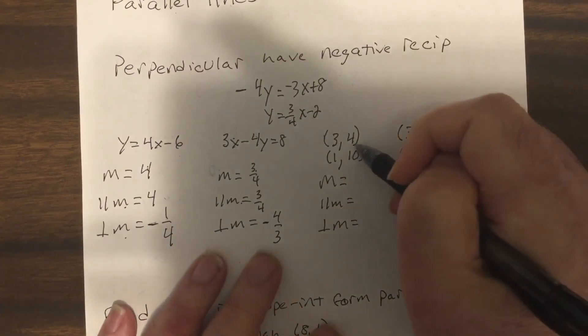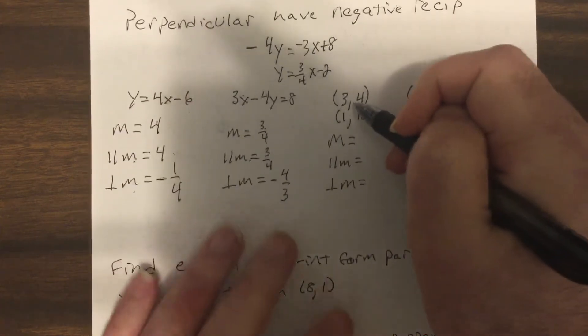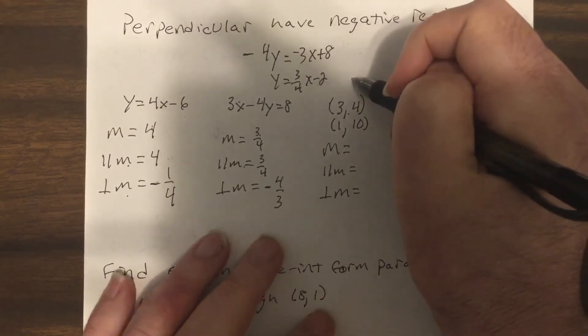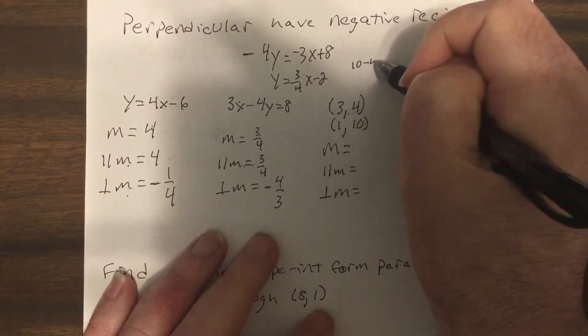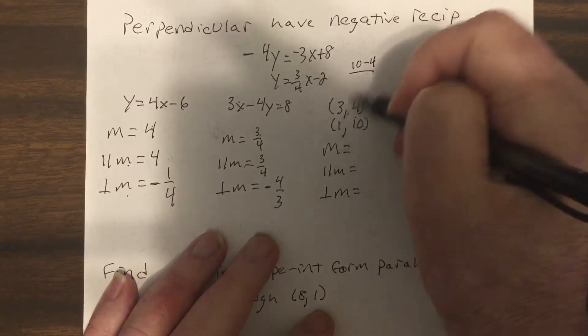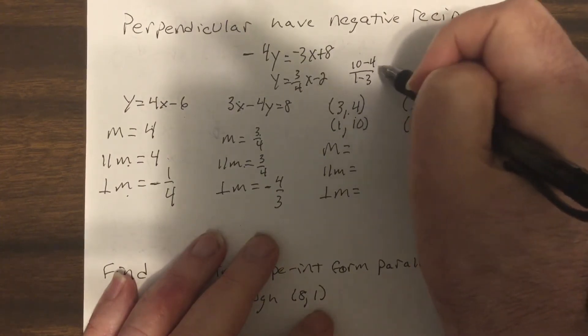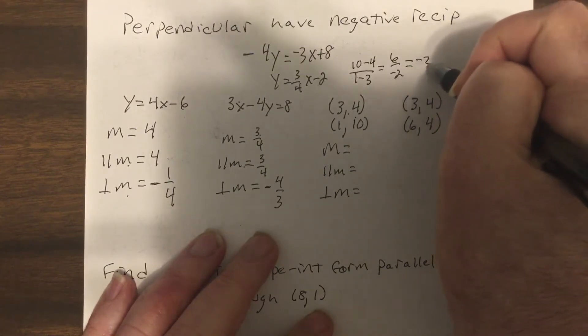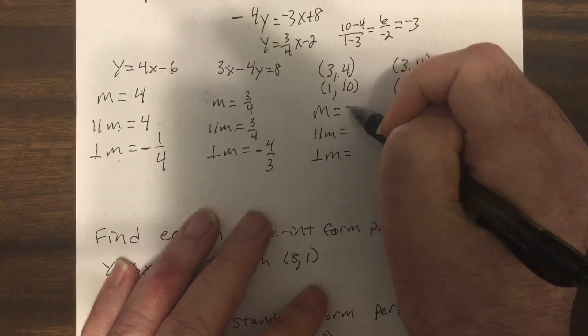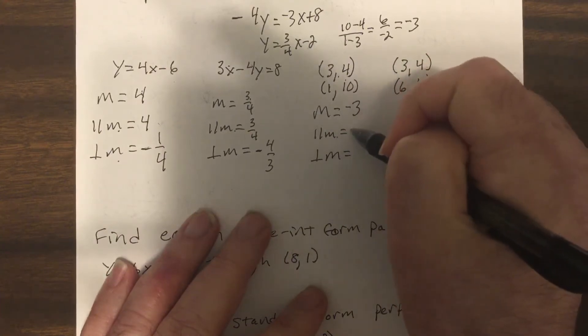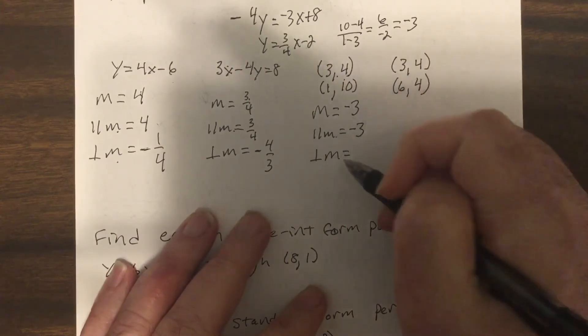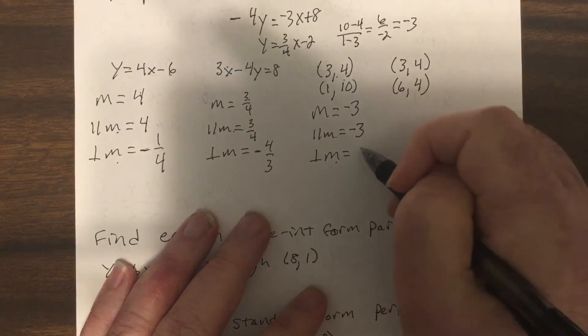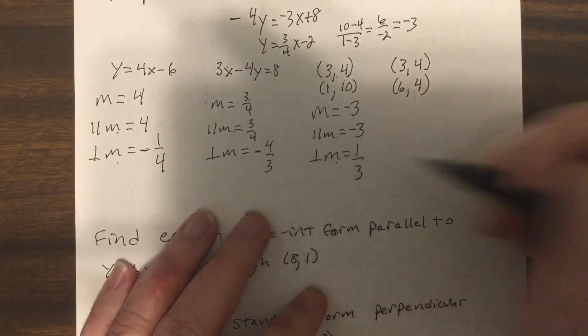This one, first I got to find the slope of the line given. So that would be 10 minus 4 over 1 minus 3, so that'd be 6 over negative 2, which is negative 3. So the parallel slope would be negative 3.